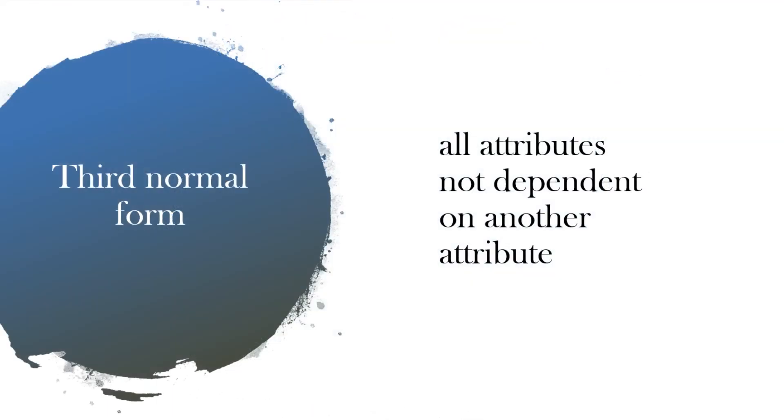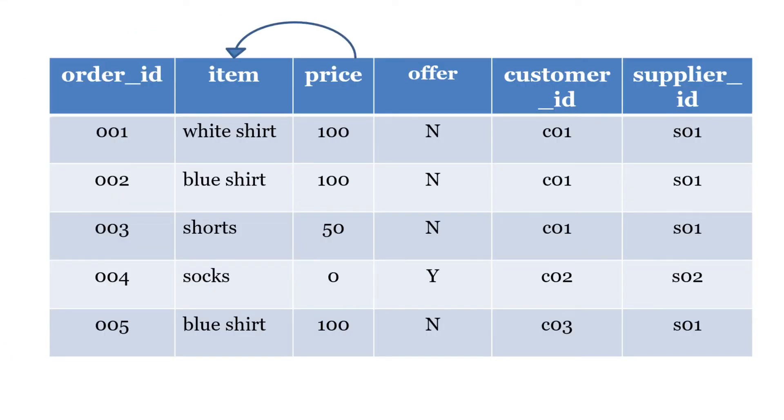Third normal form: all attributes not dependent on another attribute. Here you can see we put an arrow from price to item, because the price is dependent on the item. Price like 100 for white shirt, 100 for blue shirt, 50 for shorts - that's dependent on the item rather than the order itself. So that's what it means by that dependence.